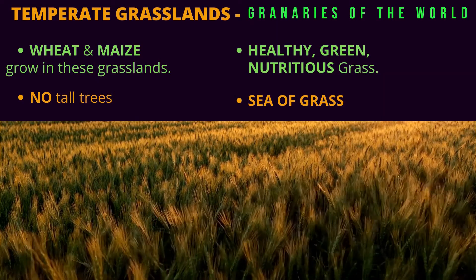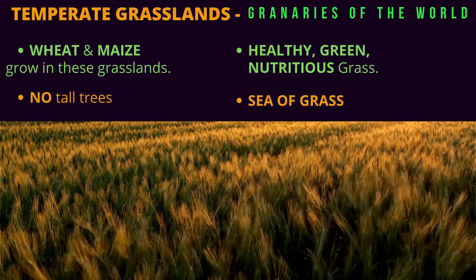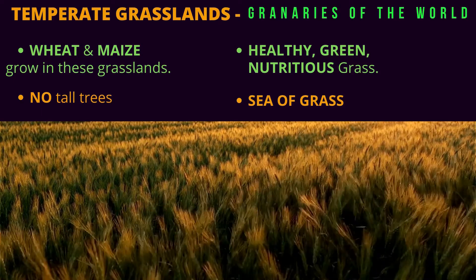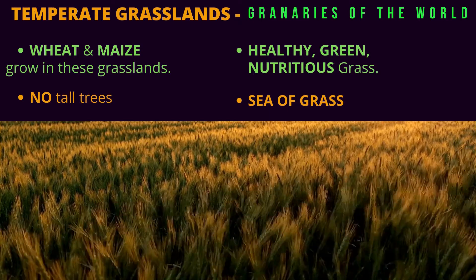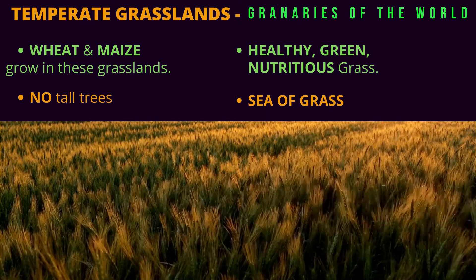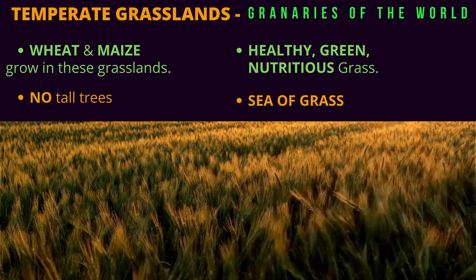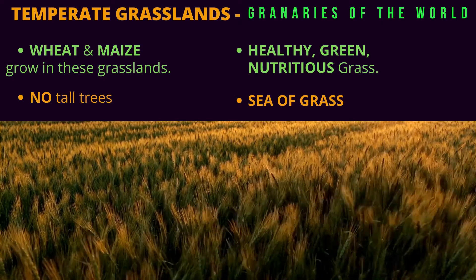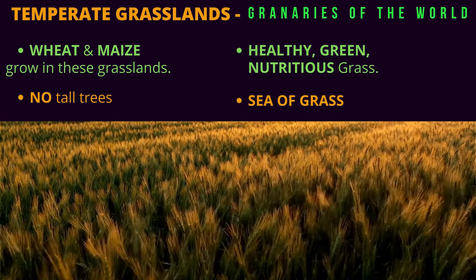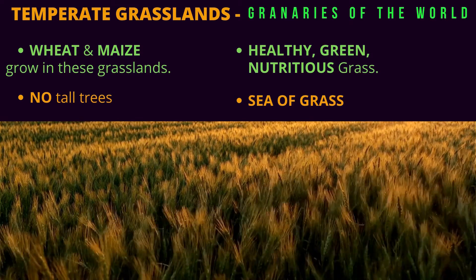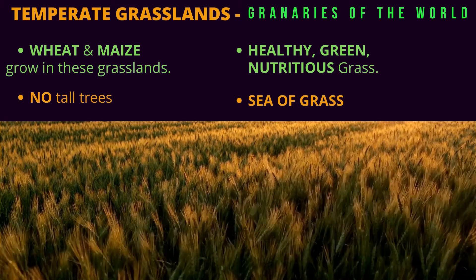Temperate grasslands are also known as the granaries of the world. Wheat and maize grow in these grasslands. You will not find tall trees here. The grass here is healthy, green and nutritious. It is also known as a sea of grass.